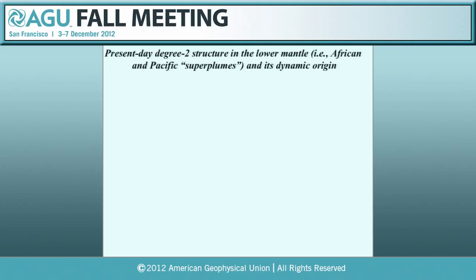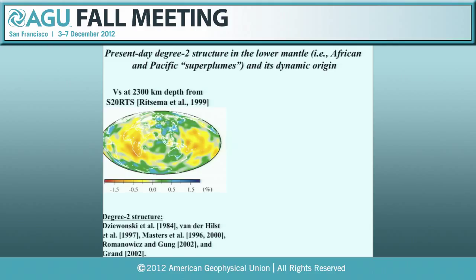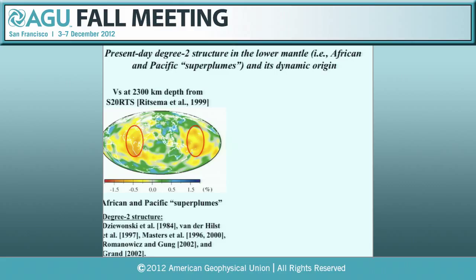Today I'm going to talk about mantle structure evolution for the last 500 million years. The present-day Earth mantle structure is dominated by the degree-2 spherical harmonic structure in the lower mantle — shown here in seismic tomography results at longer wavelengths. This degree-2 structure is sometimes called the African and Pacific superplumes. We have two seismically slow anomalies separated by seismically fast anomalies dominated by subducted slabs. These structures exist throughout the lower mantle, extending a bit into the upper mantle.